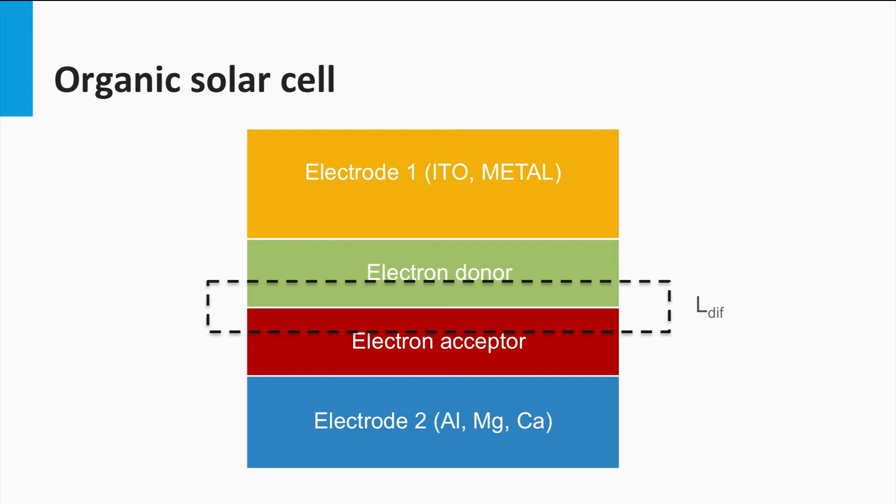An electron is injected in the electron acceptor and a hole remains in the electron donor material. A problem of this device concept is that the diffusion length of the exciton is only 10 nm. It means that in this simple configuration the thickness of the solar cell is limited by the diffusion length, while the thickness has to be at least 100 nm to absorb enough light.